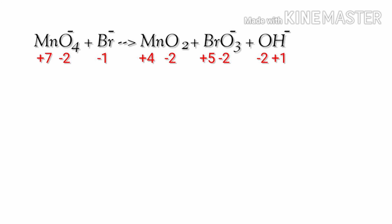In ion electron method, one reaction is divided into two reactions and then they are balanced and then they are added together. Identify the oxidation and reduction reactions.